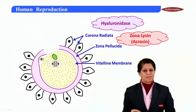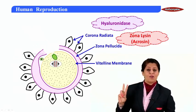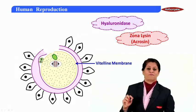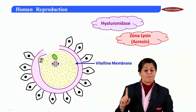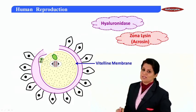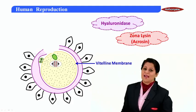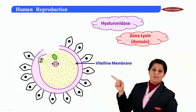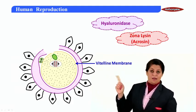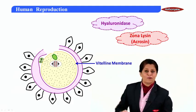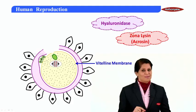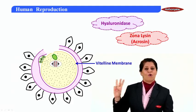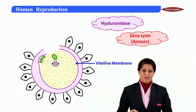Immediately after, meiosis 2 completes. The egg was arrested at metaphase 2 of meiosis 2, and now it proceeds further and meiosis 2 completes. You can now see two polar bodies. By this time, the first polar body also divides to form another polar body, so in the perivitelline space you may see two or three polar bodies.